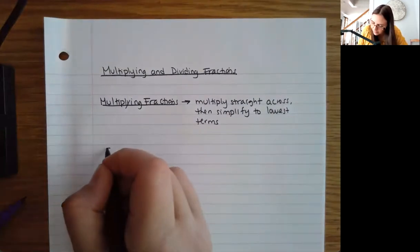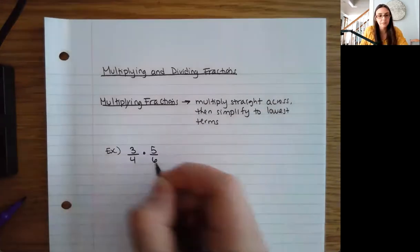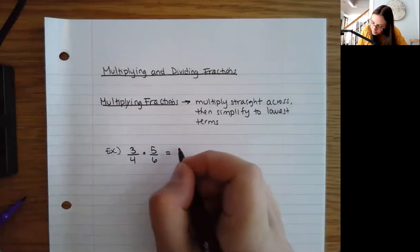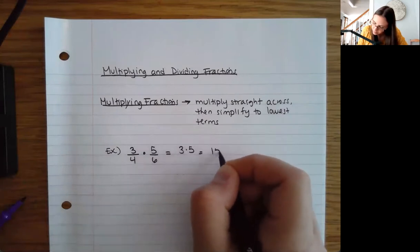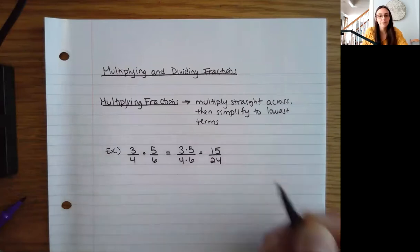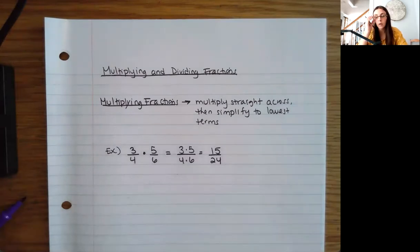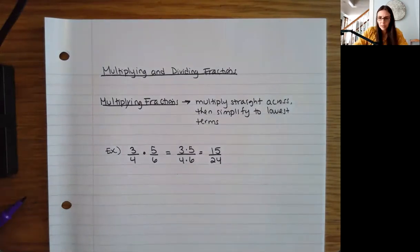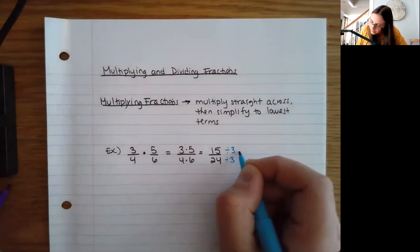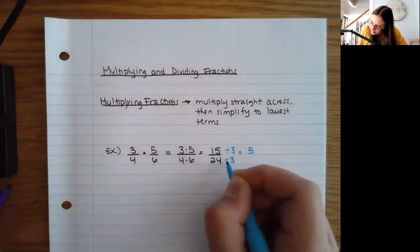So for instance, let's say I have something like 3/4 times 5/6. I go straight across — I have 3 times 5 in the numerator, which is 15. And then I have 4 times 6 in the denominator, which is 24. And now I can simplify. I recognize that both of these are divisible by 3, so 15 divided by 3 is 5, and 24 divided by 3 is 8.